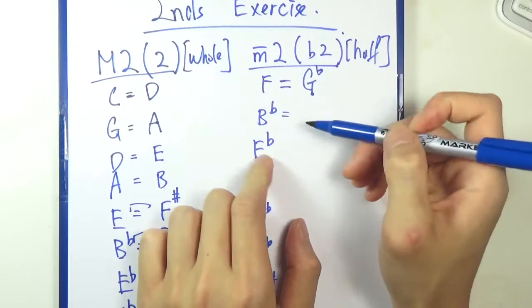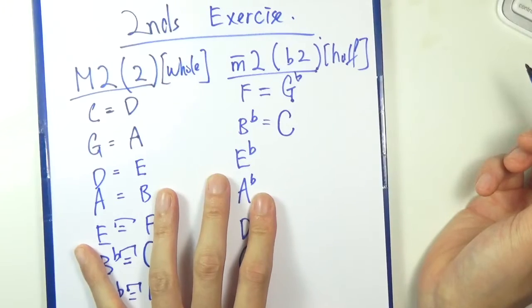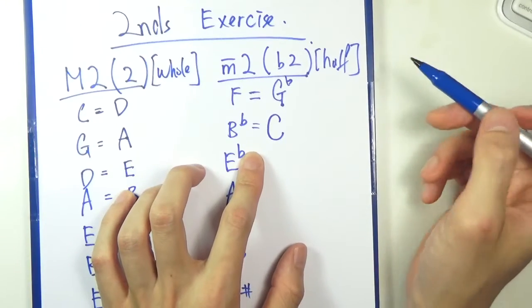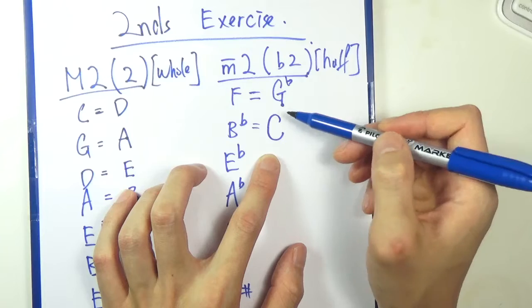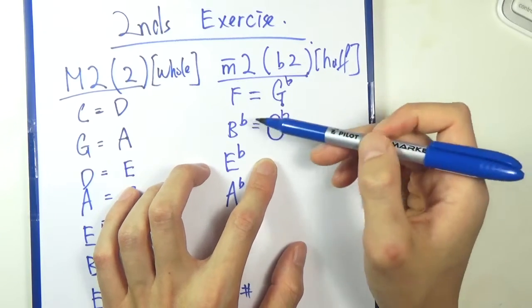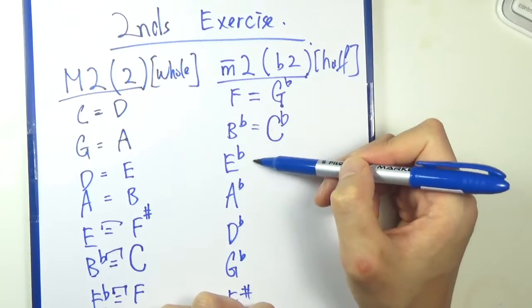So we should be good there. B flat, quantity first, so C. So B flat to C is a whole step, so it's too big. So B flat, C flat would be our answer, because they are a half step apart.